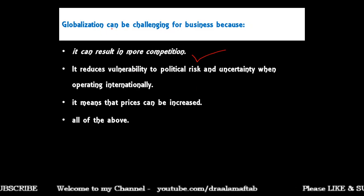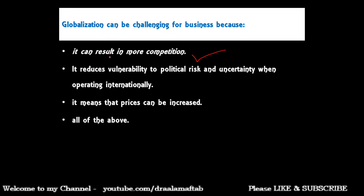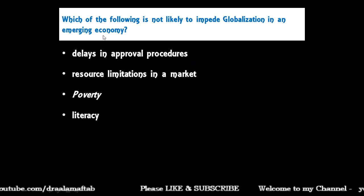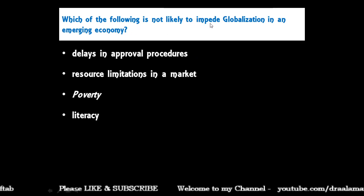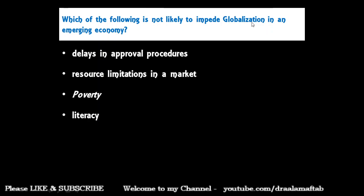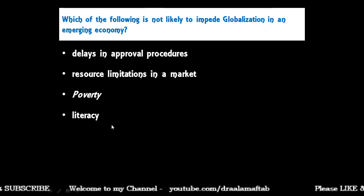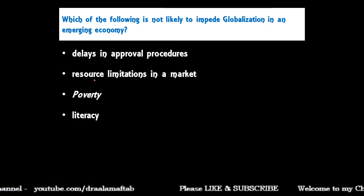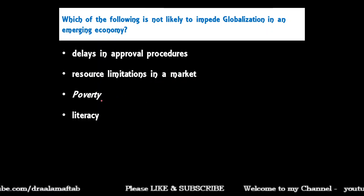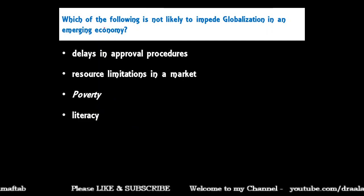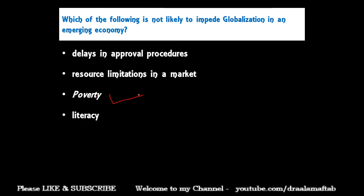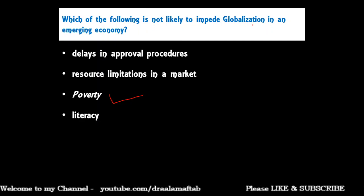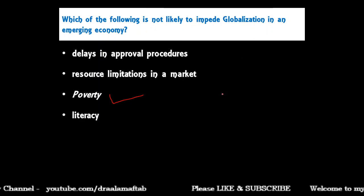Next: which of the following is not likely to impede or obstruct globalization in an emerging economy like India — delays in approval procedures, resource limitations in a market, or poverty and literacy? The correct answer is poverty. Poverty is not likely to impede or obstruct globalization in an emerging economy.